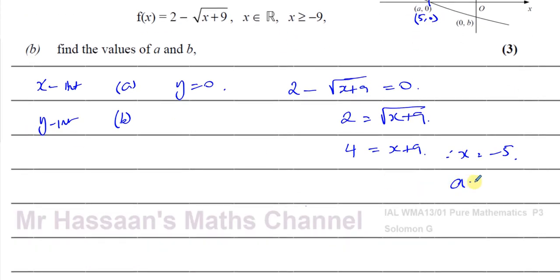So the x-intercept is (−5, 0), and therefore a equals negative 5.